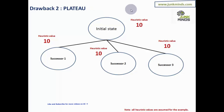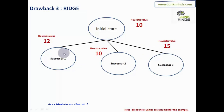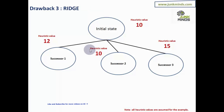The second drawback is a plateau — where the current state and all successors have the same heuristic value. The third is a ridge — where all successors have a value worse than or the same as the current state. In all three cases — local maxima, plateau, and ridge — both simple hill climbing and steepest ascent hill climbing get stuck.